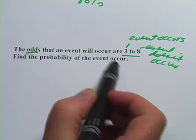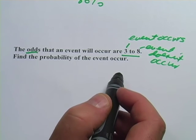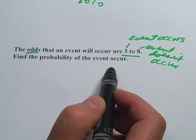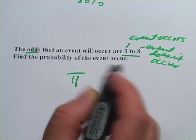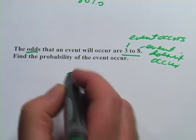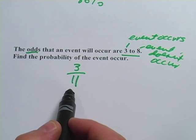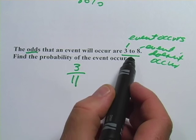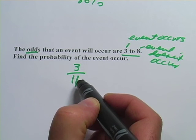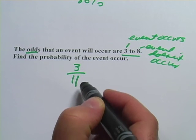So the total number of chances here is actually three plus eight, or eleven. And now the probability that it's going to occur is three out of a total of eleven chances. It's another way to say the same thing: the odds are three to eight, or the probability is three out of eleven.